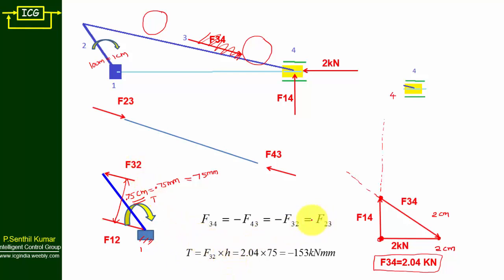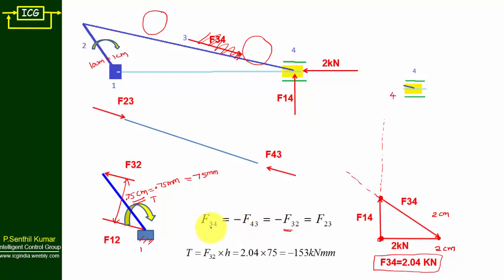Now to find torque: F34 equals minus F43, and F43 equals minus F32, so F32 equals minus F34. Therefore, F32 equals minus of F34, which is minus 2.04 kilo Newton. Torque equals F32 times h equals minus 2.04 kilo Newton times 75 mm, giving torque equals minus 153 kilo Newton mm. This is the value of torque acting on the crank.